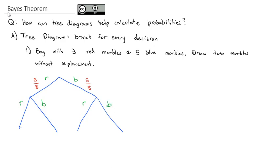The probabilities on the second set of branches change because if I drew red the first time, there are only two reds left out of seven total remaining in the bag. Similarly, if I draw red on the first draw, there are still five blues left but only seven total. Going down the next branch, if blue was the first draw, there are three reds left out of seven remaining. But there are only four blues left out of seven for the second draw.